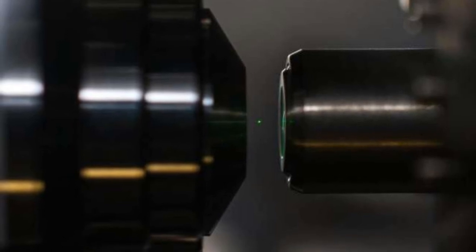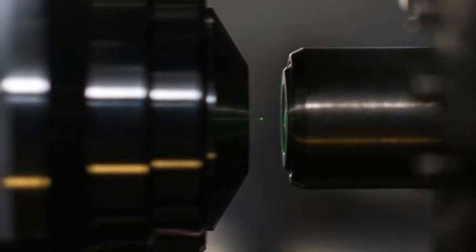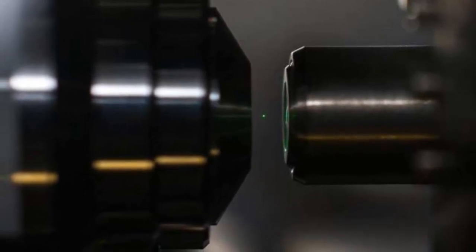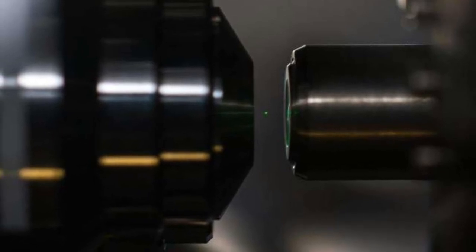Nanodiamonds trapped at atmospheric pressure are continuously agitated by collisions with the air molecules around them. Trapping the diamonds in vacuum removes the effect of all these air molecules. This allows us to exert mechanical control over them.